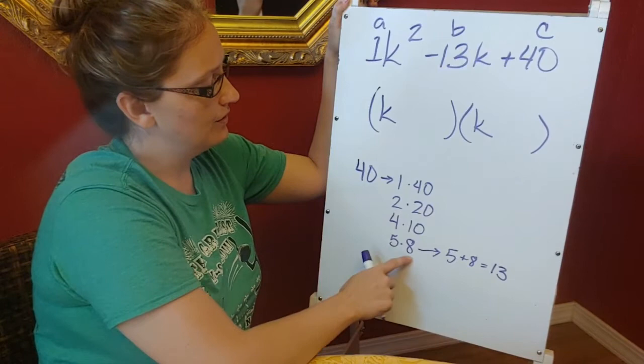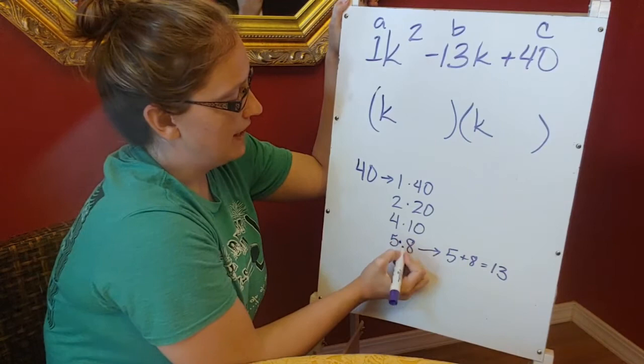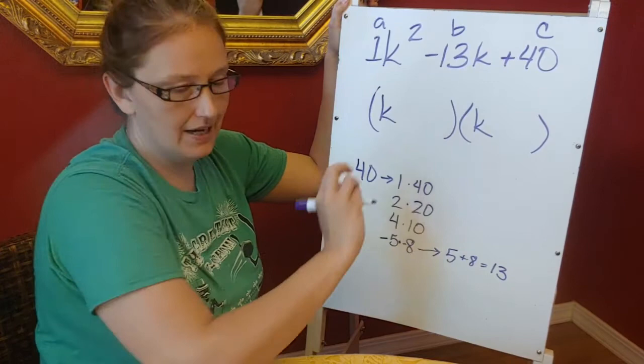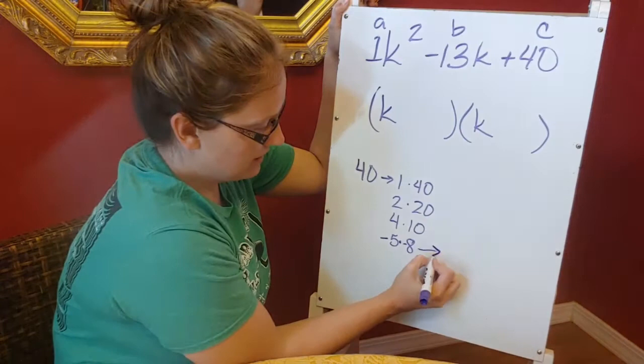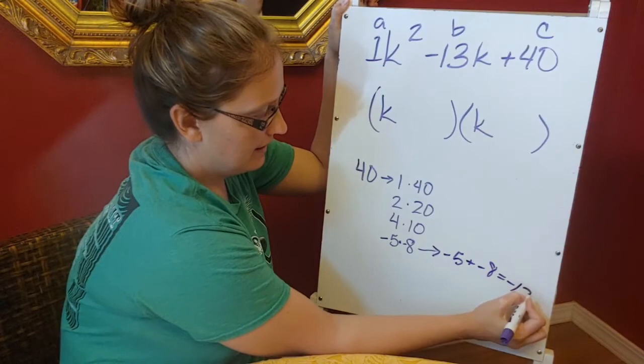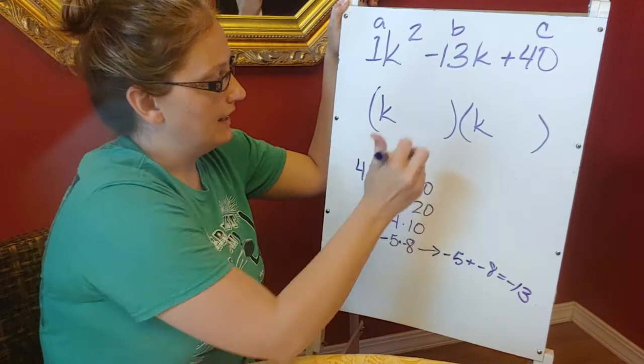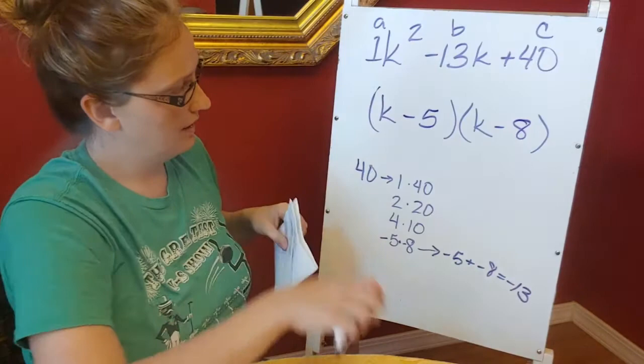So I know that 40 is positive, so I need to look at this 5 and this 8. Positive 5 times a positive 8 gives me 40, but what if I have a -5 and a -8? Multiplying a -5 times a -8 still gives me a positive 40, but it allows me to come over here and whenever I add those together, -5 + -8, I get that -13. So I'm going to use -5 and -8. And that's factored form.